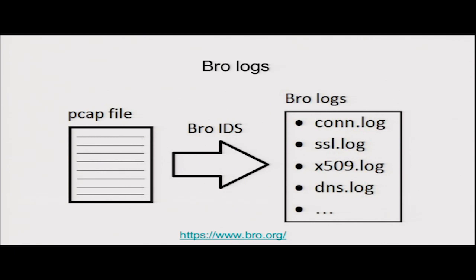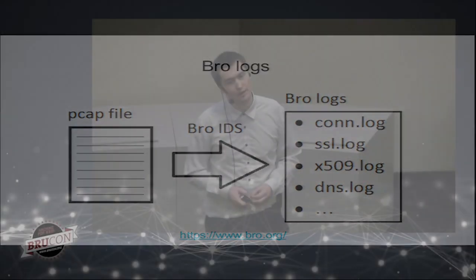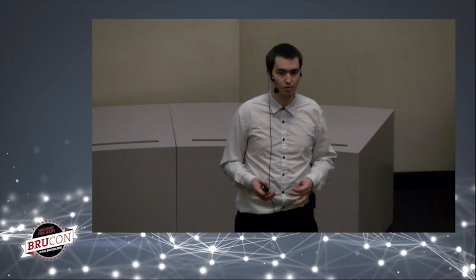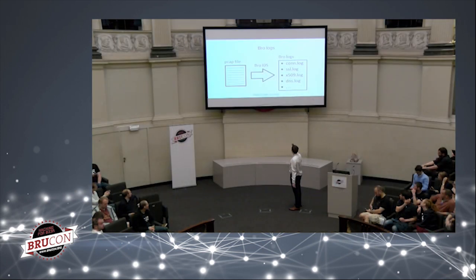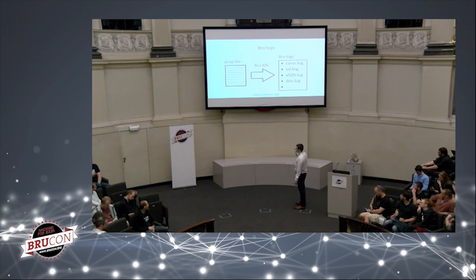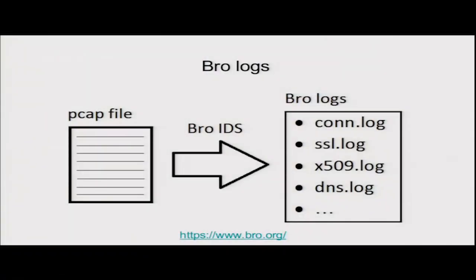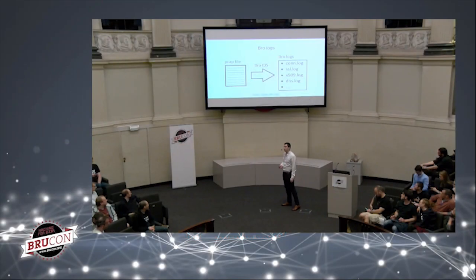Now let's discuss features and methods. We start with pcap files and use BroIDS, an open-source program for network monitoring that generates log files. From the pcap files it generates several logs, and we use three of them: the conn log (TCP handshake), SSL log (SSL/TLS handshake), and X.509 log (certificate details).